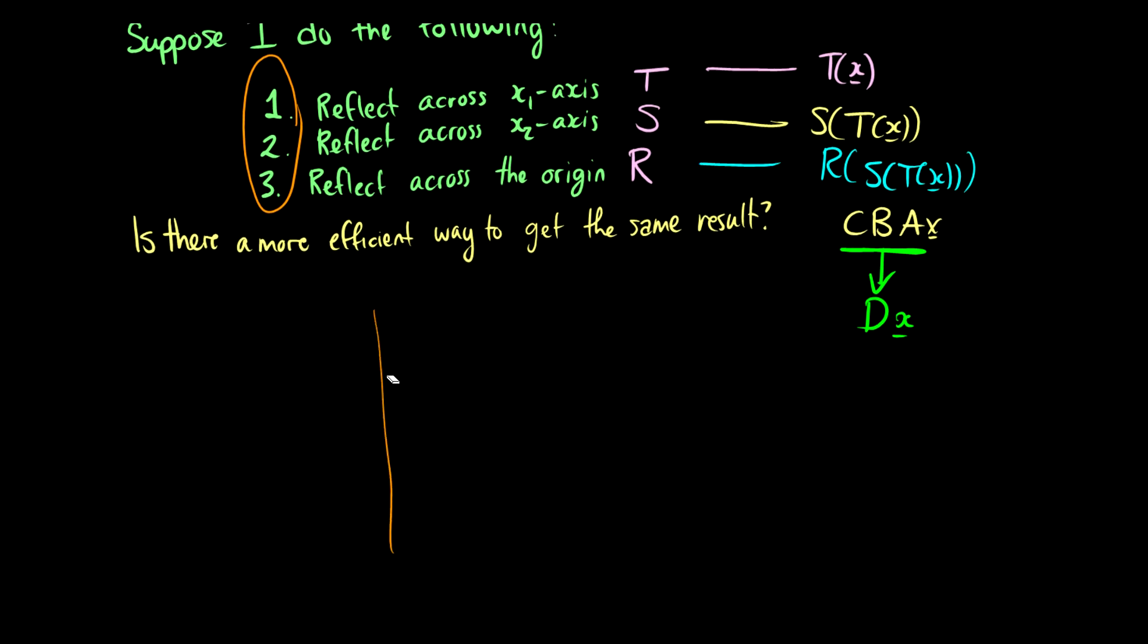So for this example, we're going to use a picture and figure out what's going on here. So I'm going to draw a graph. It doesn't look too bad. I'm going to take a point. Let's call this (1, 2). First, I'm going to reflect it across the x1 axis. So what that means is I'm keeping the 1, but I'm changing the y or the x2 to a negative. So this becomes (1, -2).